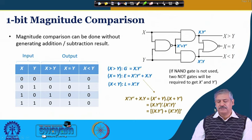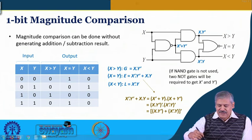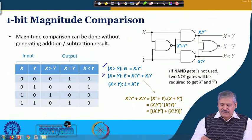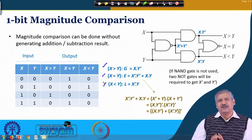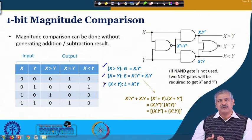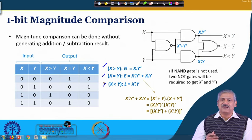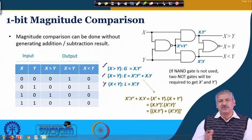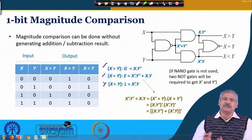When our objective is to generate only x greater than y, x equal to y, and x less than y, we do not actually need the subtraction result bits x3, x2, x1, x0. We are doing more than what is expected from us for magnitude comparison. Can we use less hardware — another kind of circuit by which we generate only the comparison result?